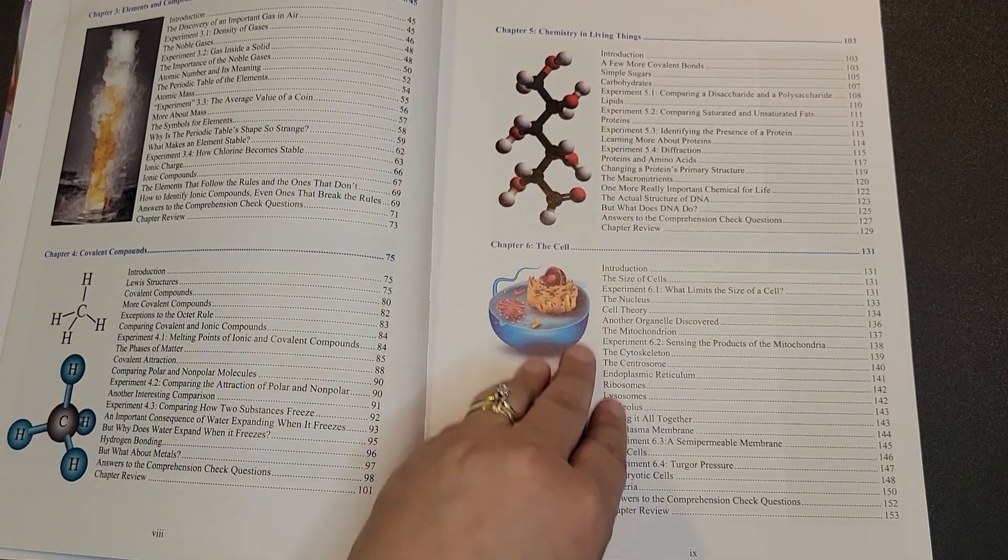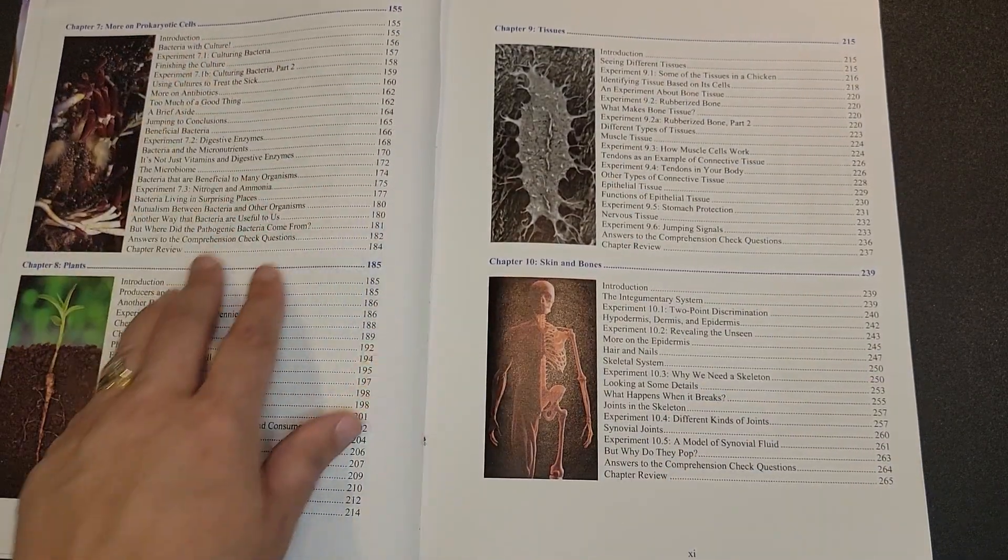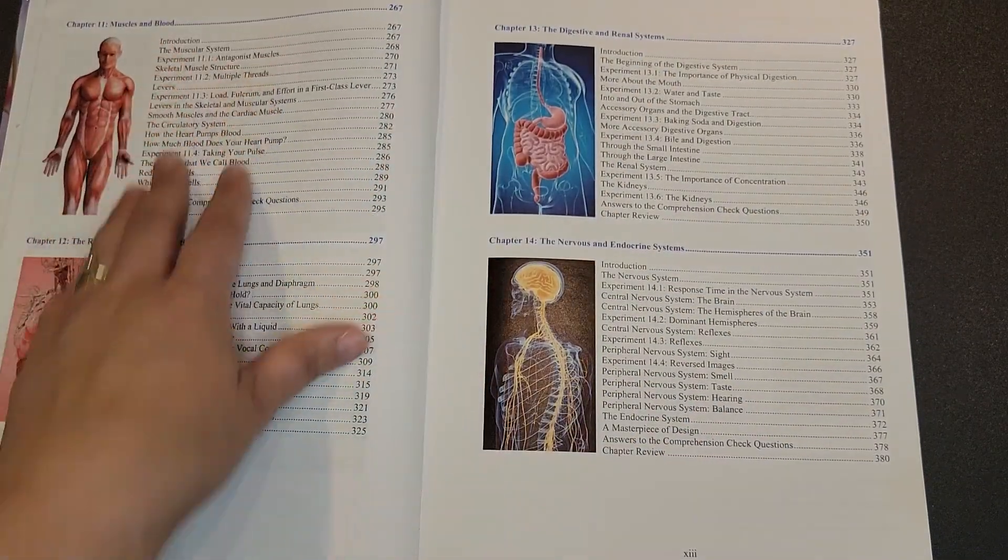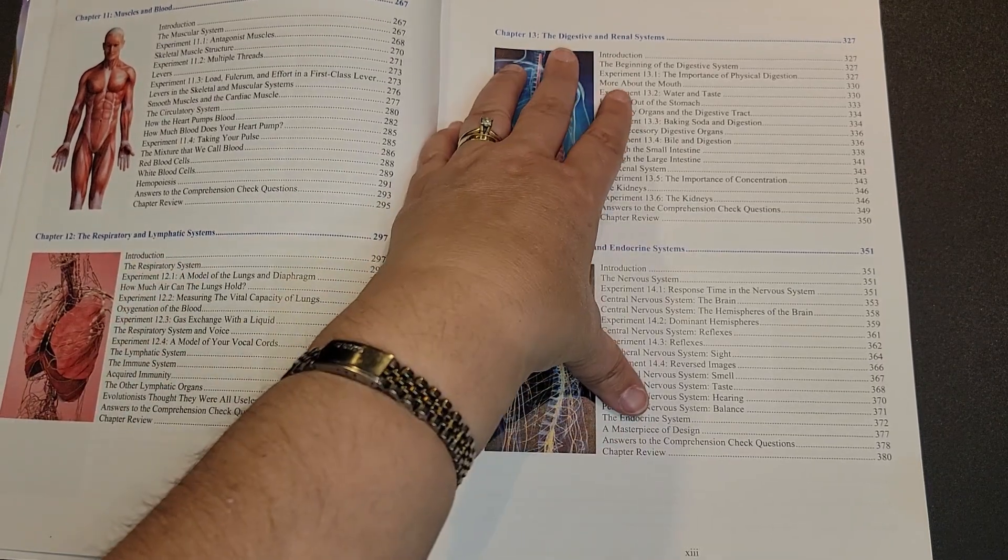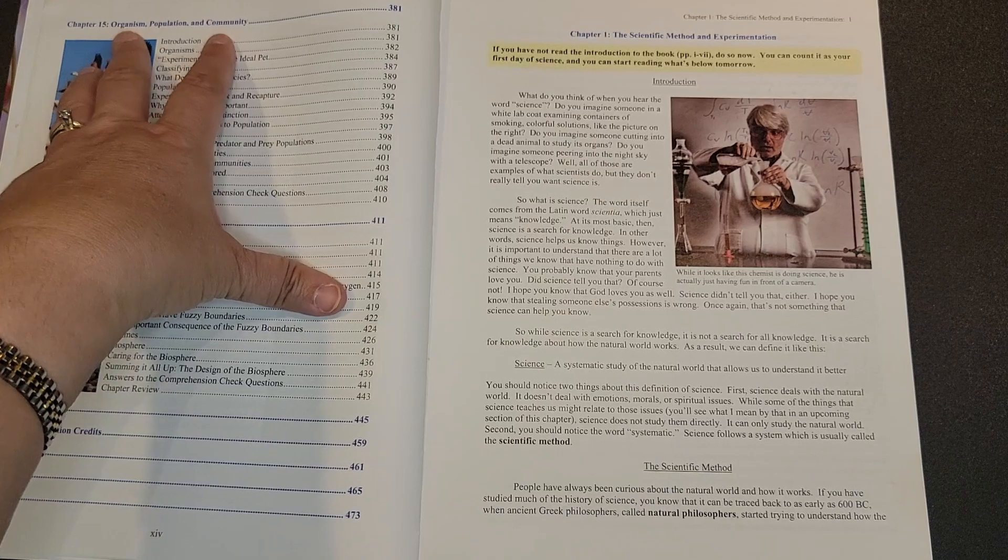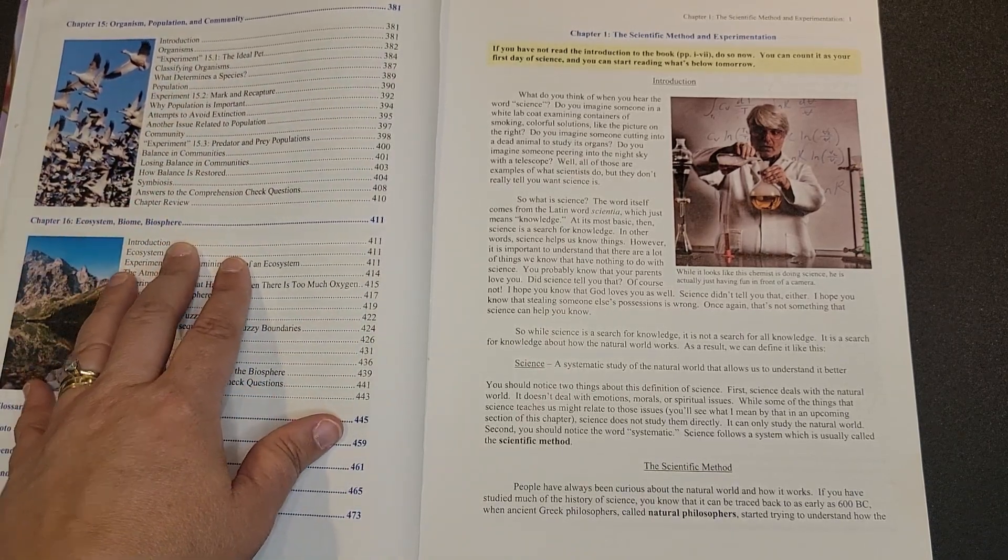Chemistry and living things, the cell, more on prokaryotic cells, plant tissues, skin and bones, muscles and blood, respiratory and lymphatic system, digestive and renal system, nervous and endocrine system, organism population community, ecosystem biome and biosphere.